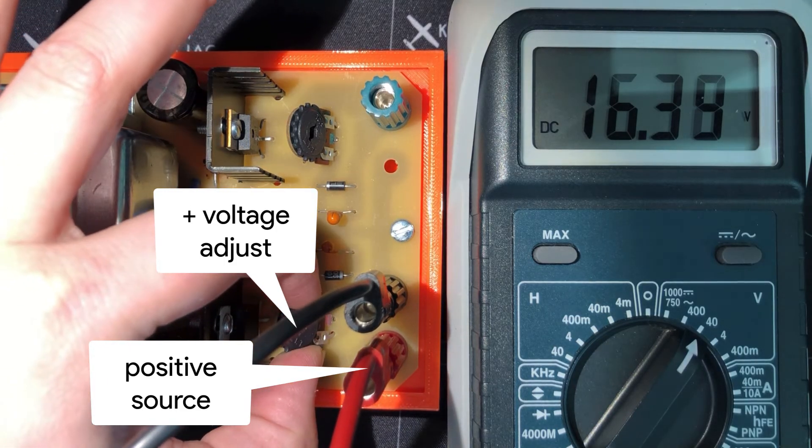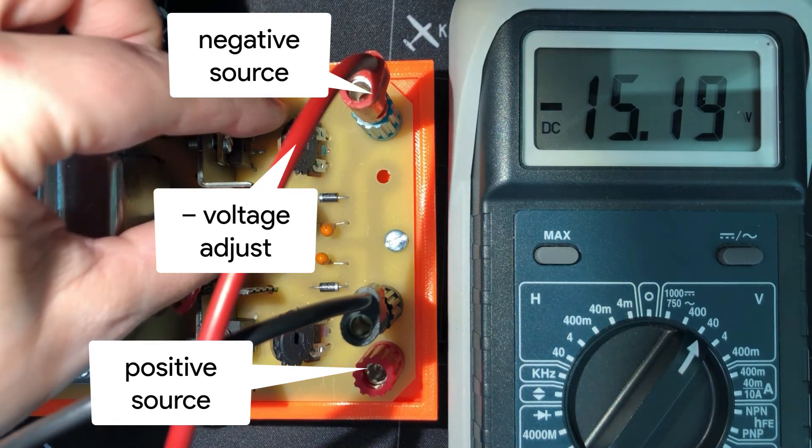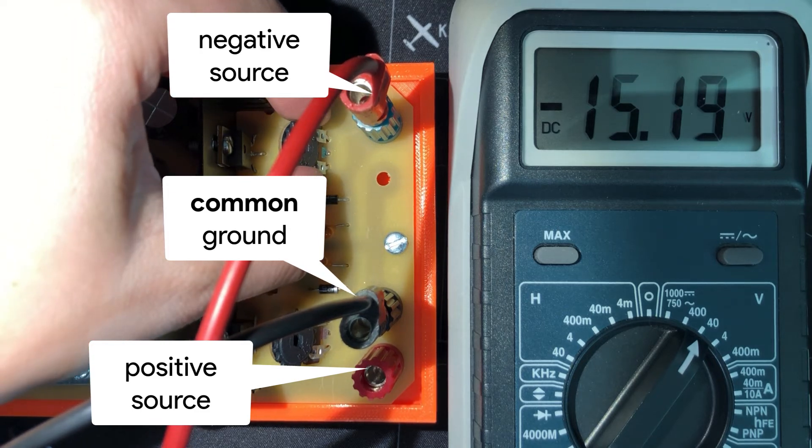In this case, the red binding post is used as the positive source, the green binding post is used as the negative source, and the black lead is connected to a common ground in your circuit.